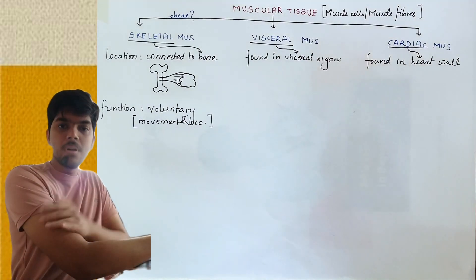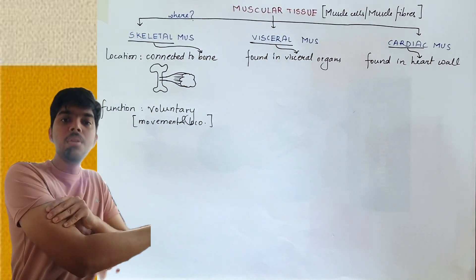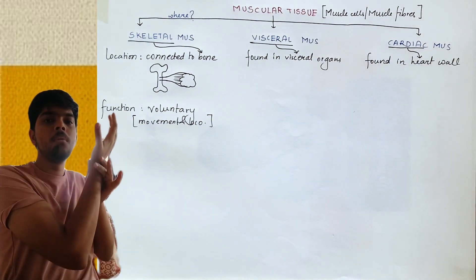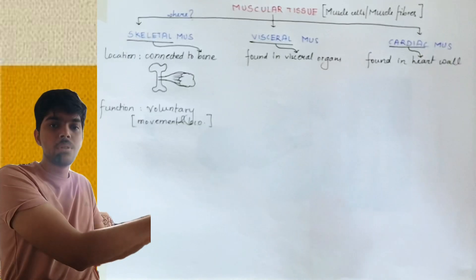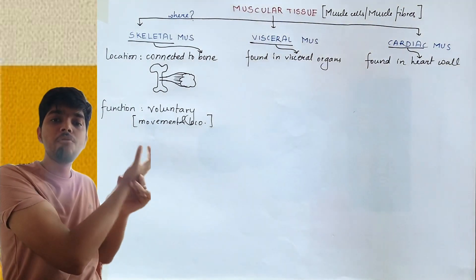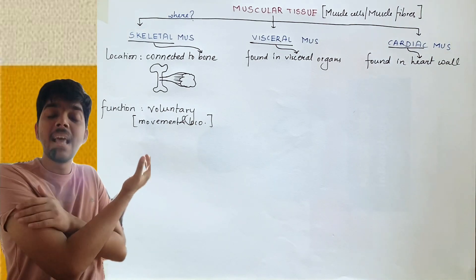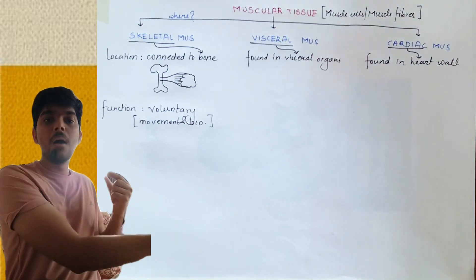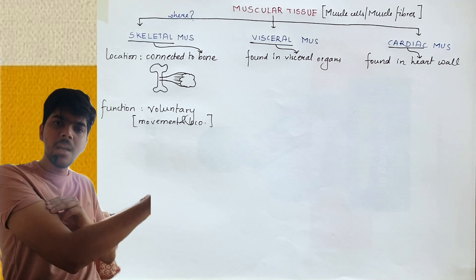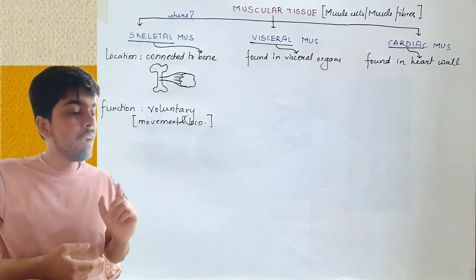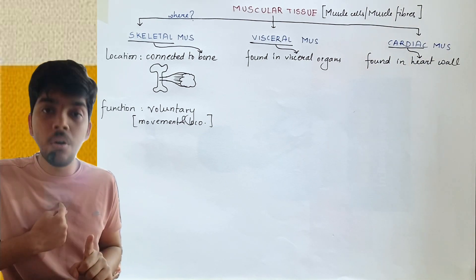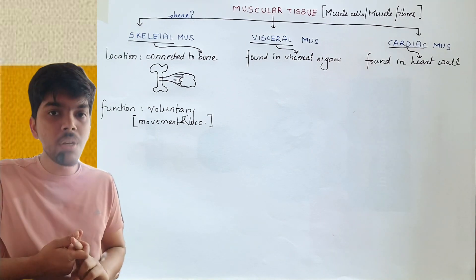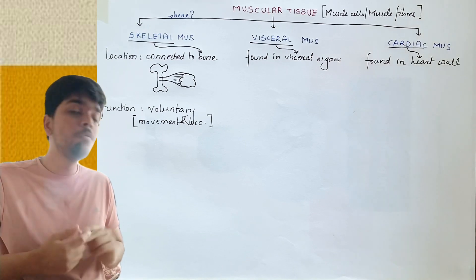For example, your bicep muscle is a skeletal muscle because it is connected to the bone present in your arm. When your bicep muscle contracts, the arm gets lifted up; when it relaxes, the arm goes down. This movement is possible due to the contraction and relaxation of the bicep muscle. You can do this with your own will — you can contract or relax your bicep voluntarily. That is why skeletal muscles are voluntary, under our control, helping in movement and locomotion.